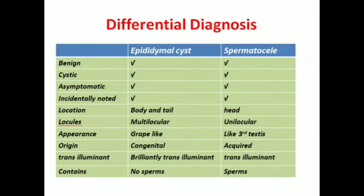The appearance of the epididymal cyst is anechoic, while the spermatocele may appear as having a third testis appearance. The epididymal cyst is a congenital defect while the spermatocele is acquired. The epididymal cyst does not contain sperms while the spermatocele contains sperms.